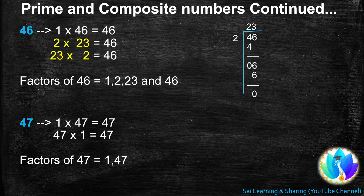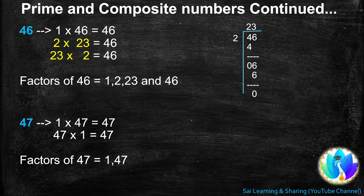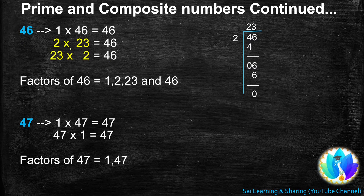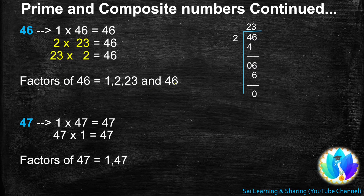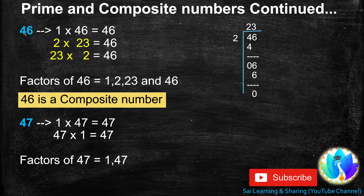46 is not a multiple of 3. When we add the digits of 46, we get 10 — 4 plus 6 is 10 — and 10 is not a multiple of 3, so 46 is not a multiple of 3. 46 is not a multiple of 4. At last, 46 is a multiple of 23: 23s are 2, 46. Now we got all the factors of 46: 1, 2, 23, and 46. A number that gets more than 2 factors is a composite number. So, 46 is a composite number.